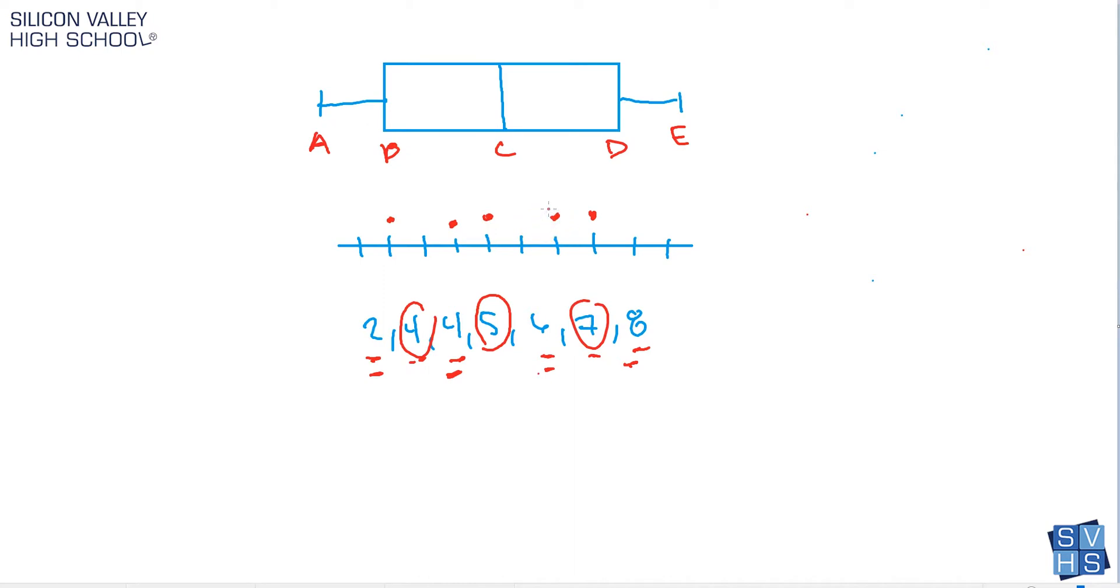And now we can draw our box and whisker plot. You have D to E as a line, you have B to A—this is a box—and then you have your median here.